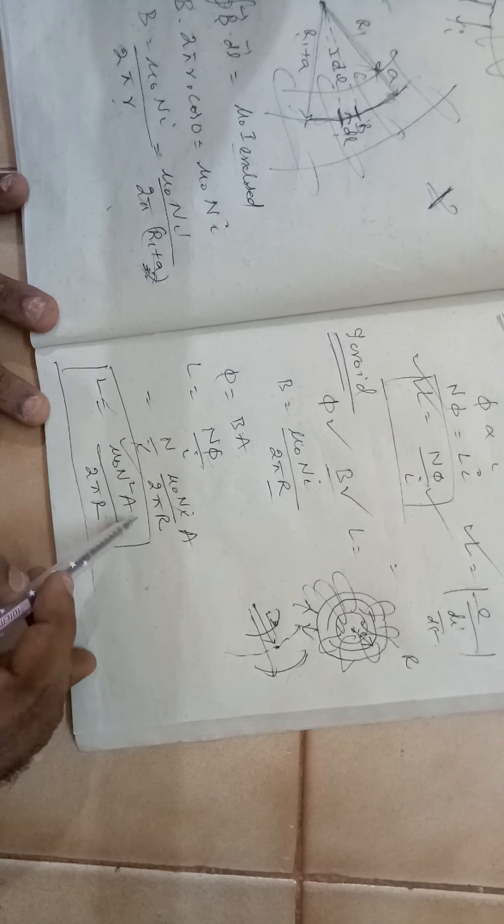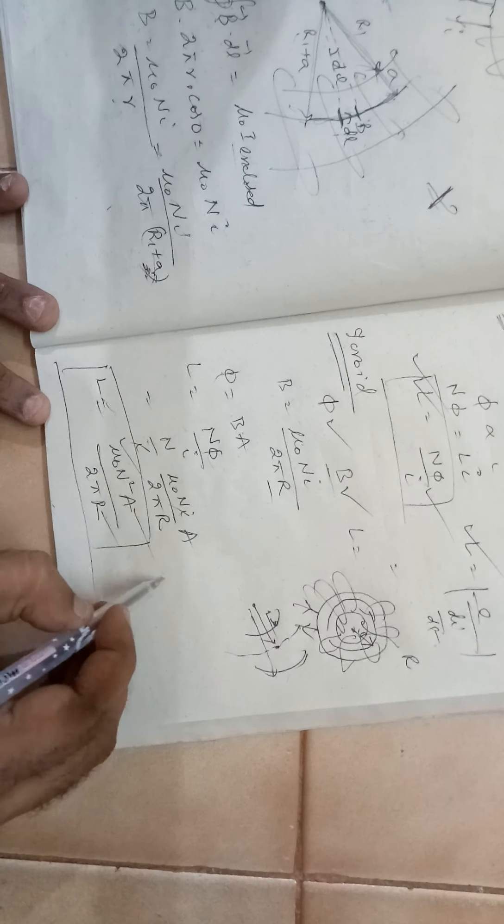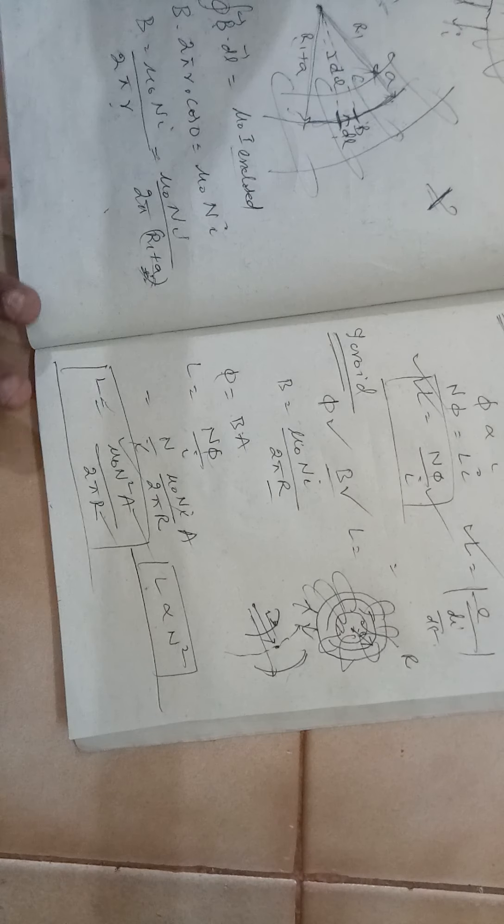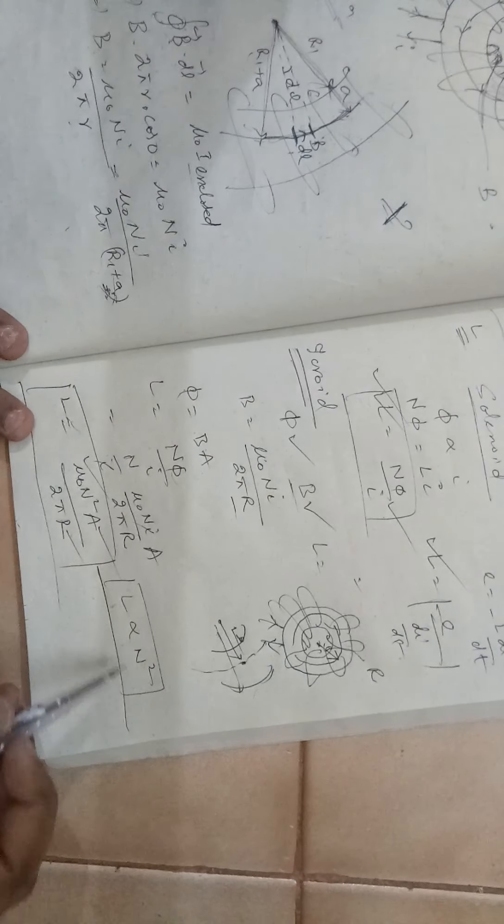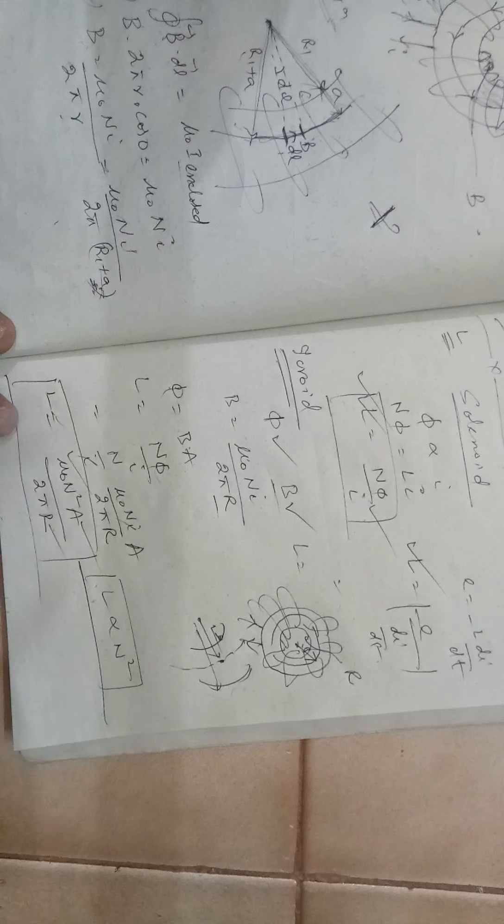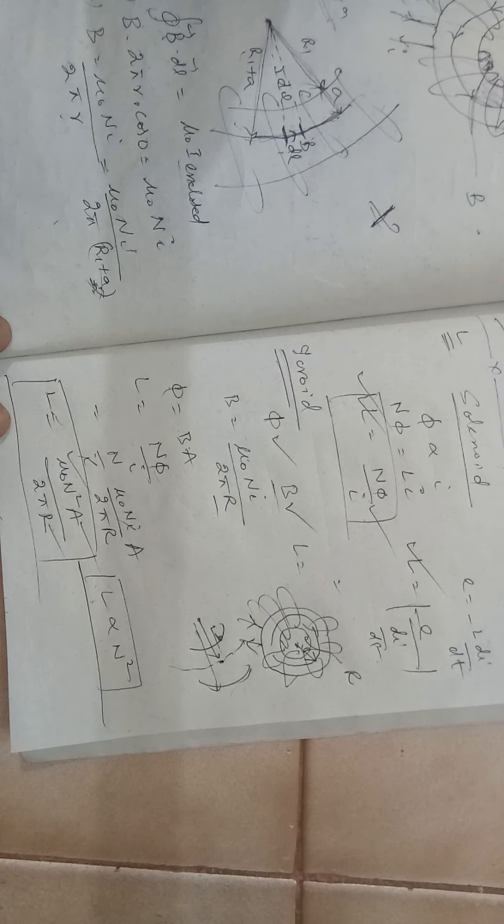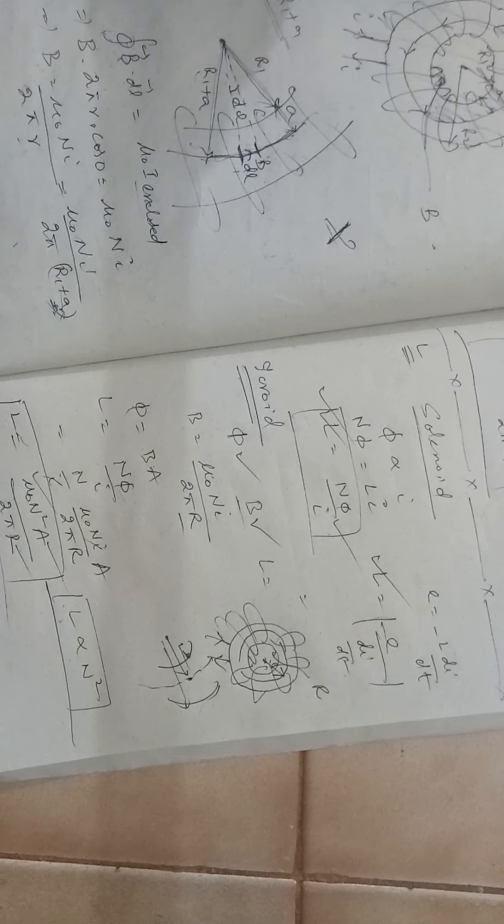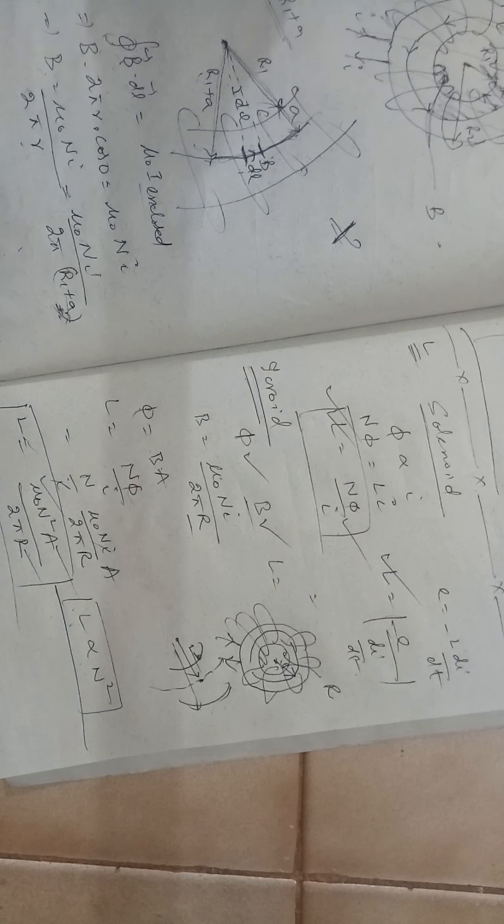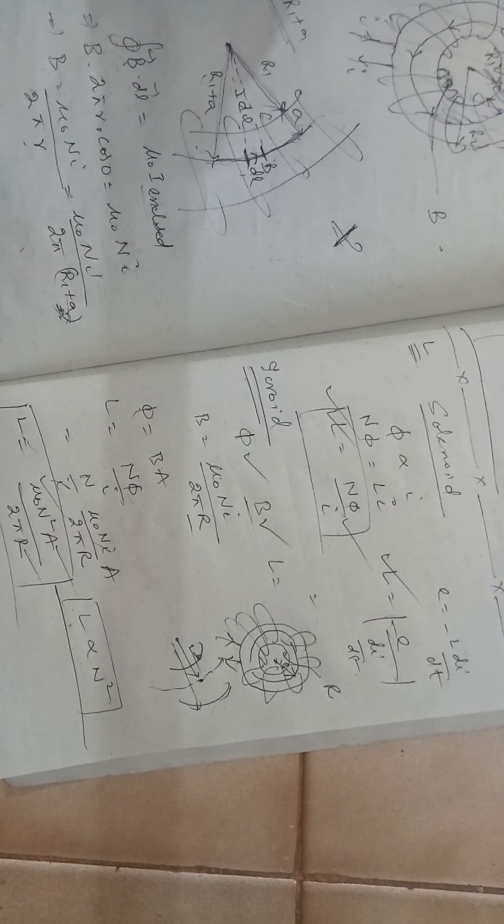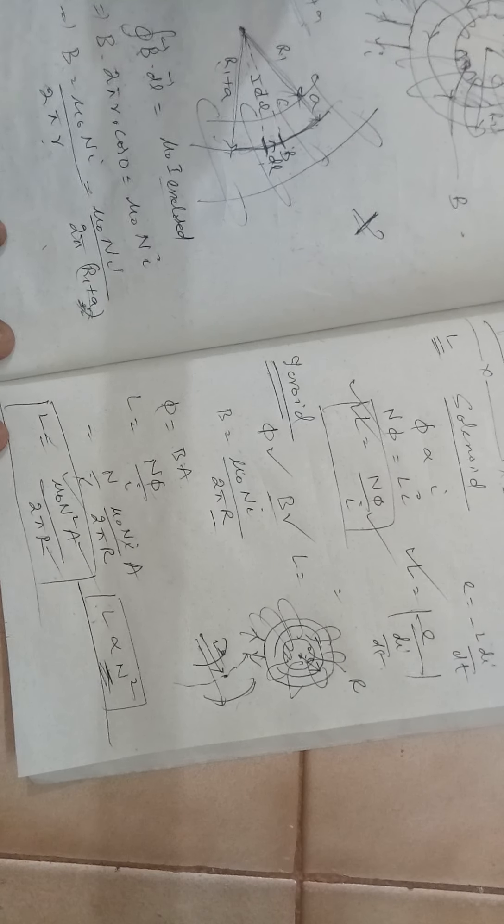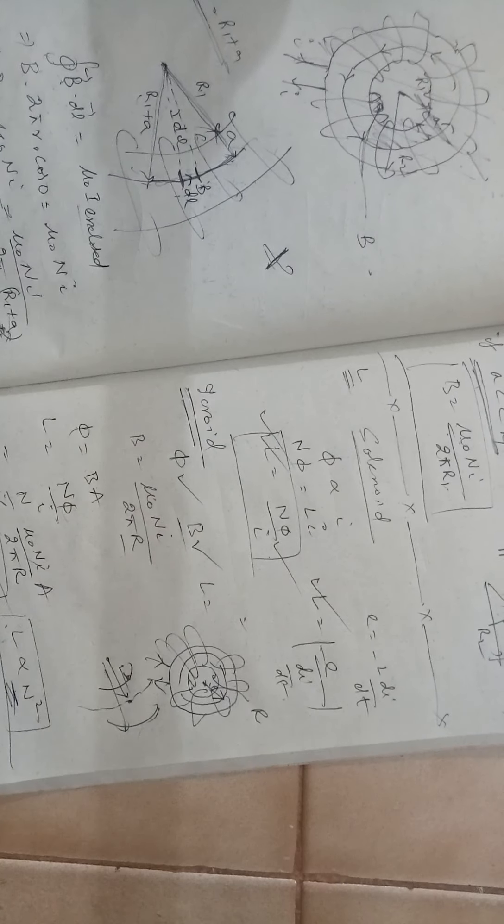Mu naught is a constant, A is a constant, R is a constant. We can say that L is proportional to N square. That means if you double the number of turns, your inductance value will rise by 4 times. If you triple it, it will rise by 9 times. Changing the number of turns is more easier than changing the other parameters. If we want a larger inductance, self inductance, you need to operate on this value of N. Thank you.